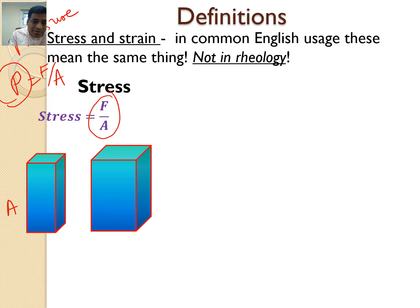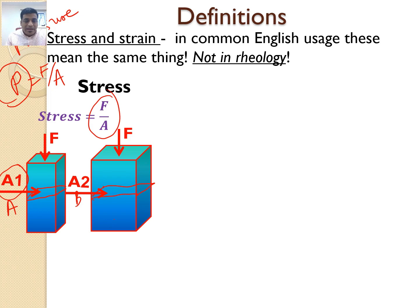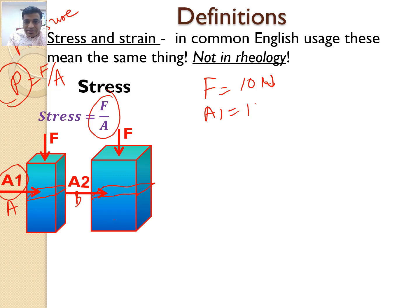We have two beams — beam A and beam B. Beam B has more cross-sectional area compared to beam A. Let's assume we apply a certain force F to both. A1 is the cross-sectional area of beam A and A2 is the cross-sectional area of beam B. Let's use some numbers: we apply force of 10 newtons on both beams. A1 is 10 mm² and A2 is 20 mm².